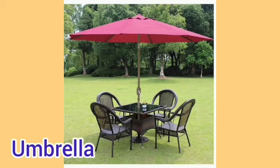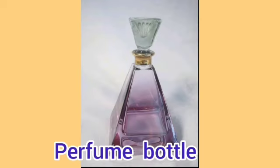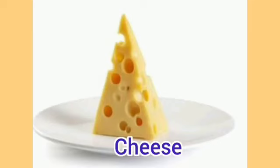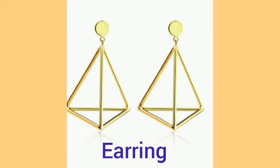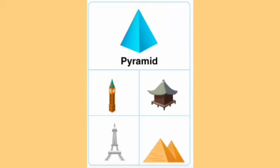Other pyramid-shaped examples include paperweight, pyramid-shaped perfume bottles, a block of cheese, and earrings and pendants which are also in pyramid shape. So the cube has six faces in a square shape and eight vertices, also known as corners, while the pyramid has five faces which are triangular in shape and five vertices.